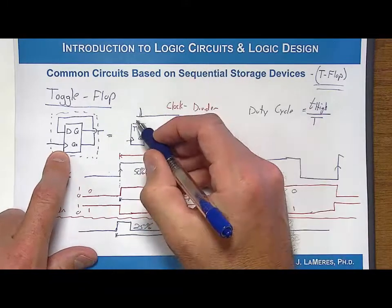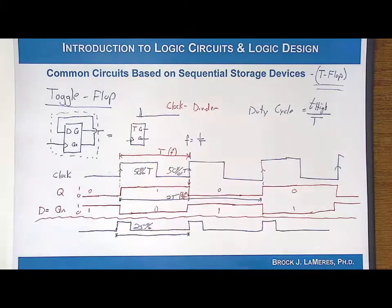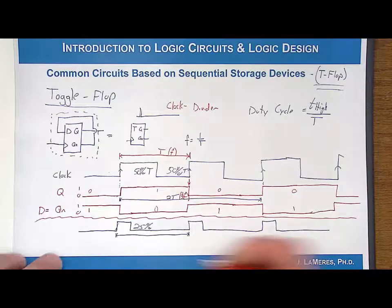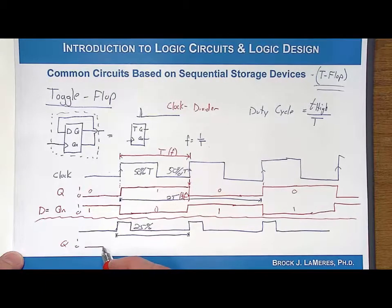If you had like a little clock that was like this, it's going to go, geez, you weren't even high long enough for me to recognize that I should have stored the D to Q. So if you think about what the output of this would be, if I look at Q, it is going to transition every time you have a rising edge of a clock.